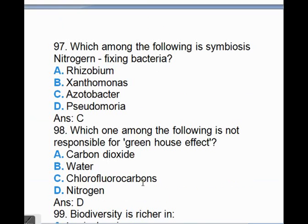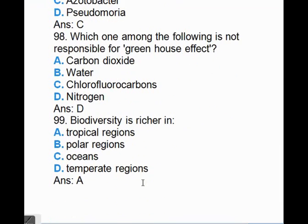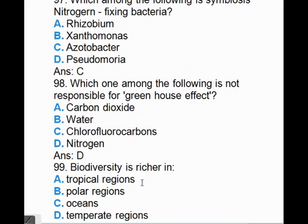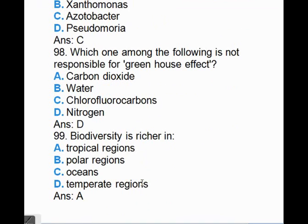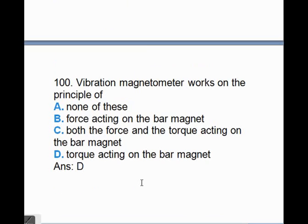Which one of the following is not responsible for greenhouse effect? Options are A, carbon dioxide, B, water vapor, C, carbon monoxide, D, nitrogen. The answer is D, nitrogen. Biodiversity is richer in, the answer is tropical regions. Vibration magnetometer works on the principle of, the answer is D, torque acting on the bar magnet.